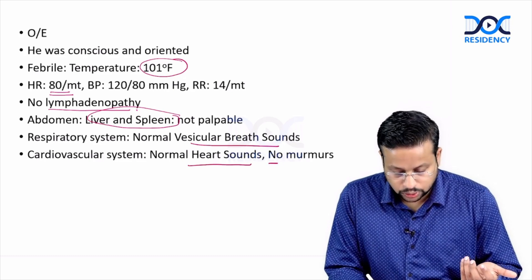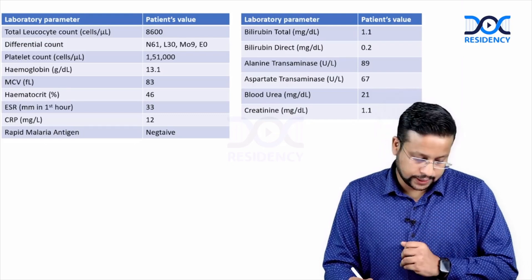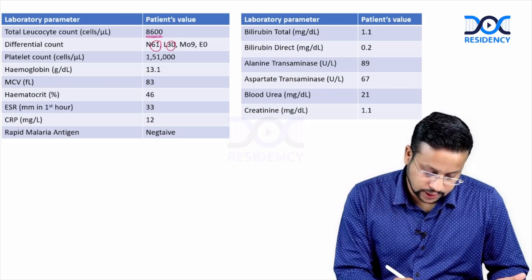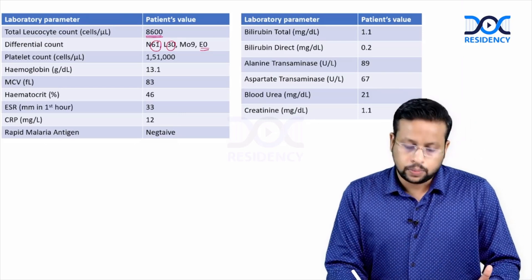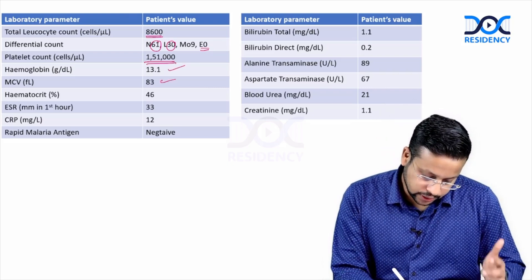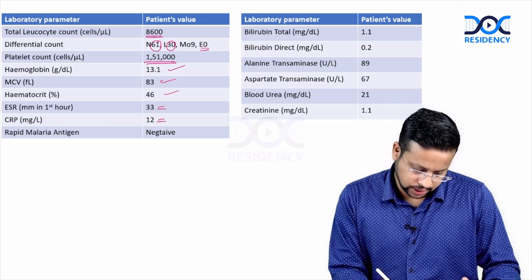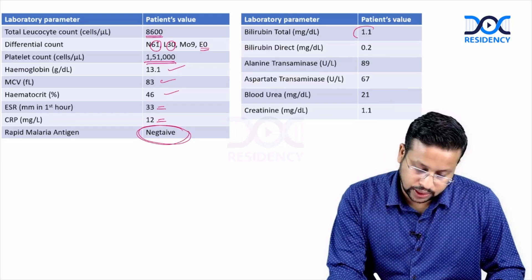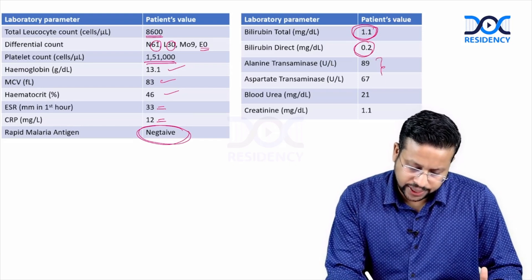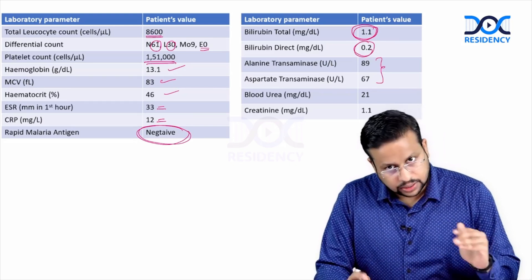Cardiovascular system: normal heart sounds, no murmurs. Investigations: total leukocyte count was 8600, neutrophils 61%, lymphocytes 30%, eosinophils 0%. Platelet count 1.51 lakhs — low normal. Hemoglobin normal, MCV okay, hematocrit okay. ESR 33, CRP mildly raised at 12. Malarial antigen negative. Bilirubin total 1.1, direct 0.2 — normal. But there is mild elevation in transaminase levels: ALT 89 and AST 67. Blood urea 21, creatinine 1.1.